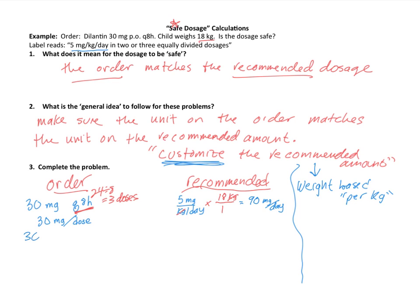So if I give 30 milligrams every 1 dose, in this problem, I know there are 3 doses in 1 day, because we would be following this order 3 times every 8 hours.